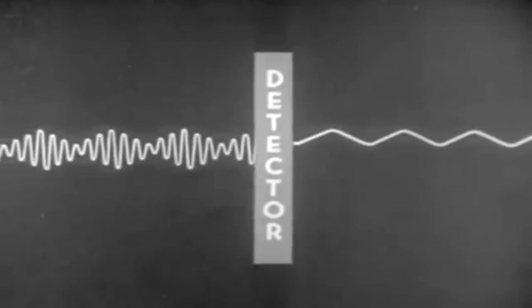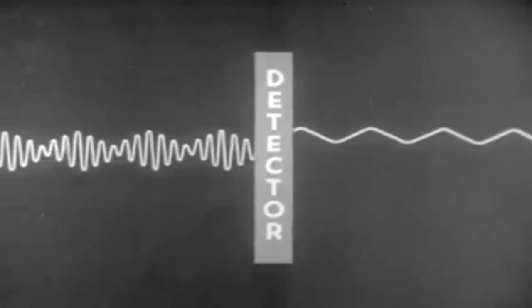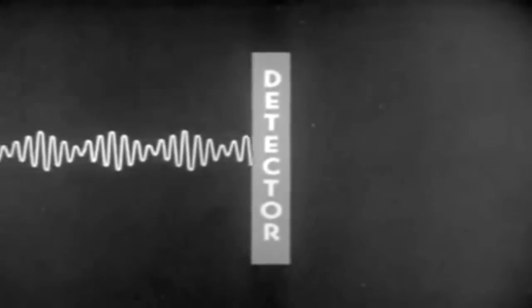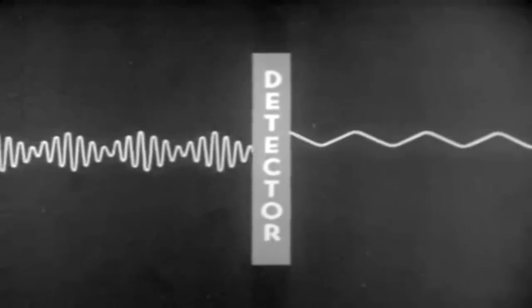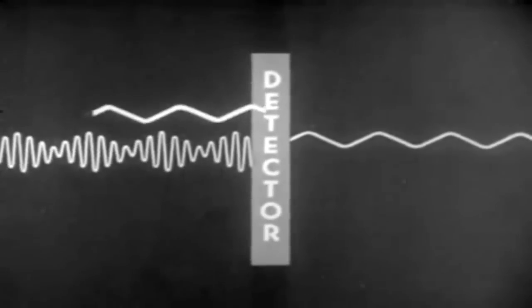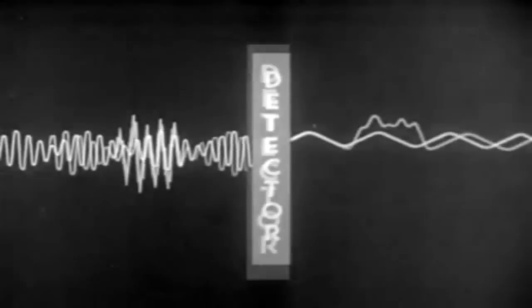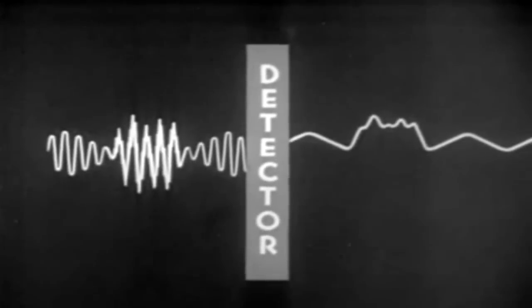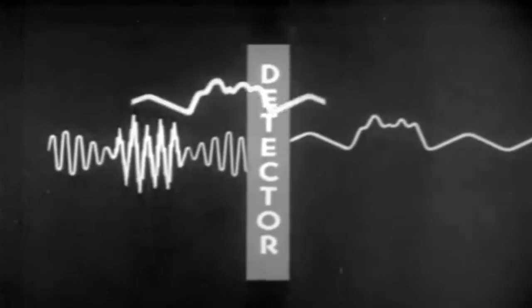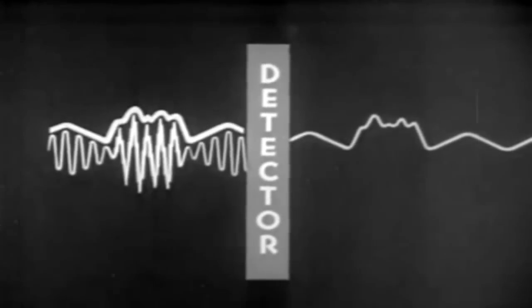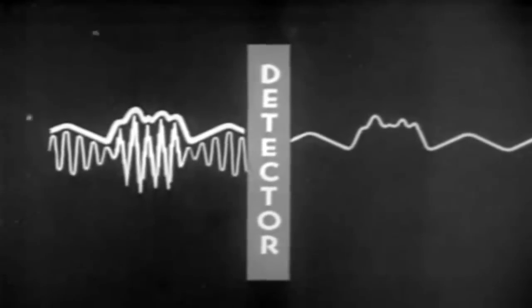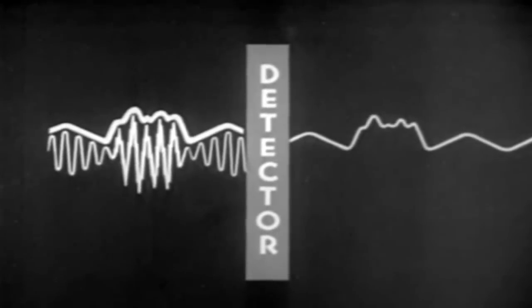The detector does its job well, but blindly — it cannot think or interpret. Feed it an RF signal with constant amplitude and there will be no output signal. Feed it a modulated RF and it will provide an audio signal which mirrors the amplitude variations of that RF. Feed it an RF signal that has been hashed up by interference, and the audio signal will contain an accurate reproduction of that same interference. The audio signal mirrors the interfered RF signal fed into the detector. There you have a major disadvantage of AM radio: it is unable to separate the intelligence from the hash and static that appear when conditions are unfavorable.